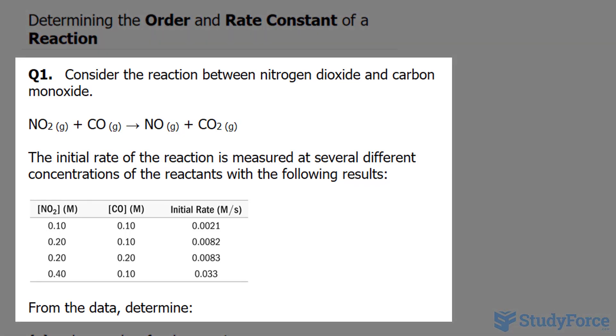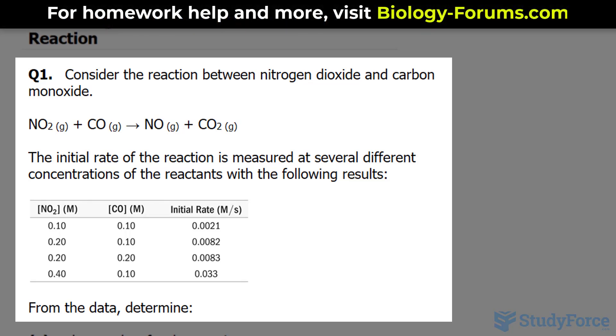Question 1 reads: consider the reaction between nitrogen dioxide and carbon monoxide. The initial rate of the reaction is measured at several different concentrations of the reactants with the following results.